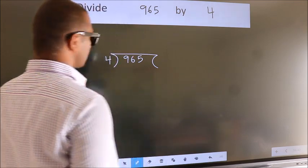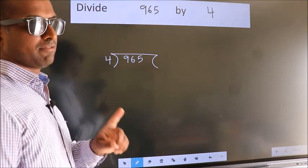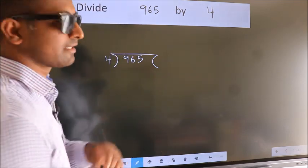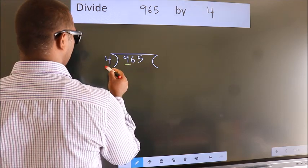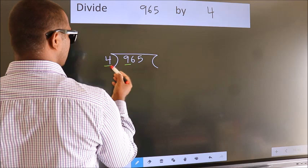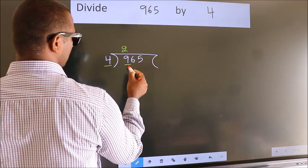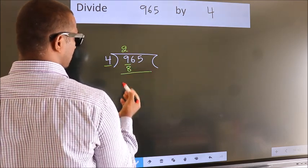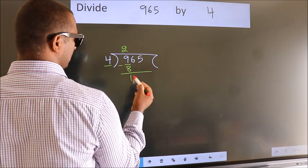This is your step 1. Next, here we have 9, here 4. A number close to 9 in 4 table is 4 twos, 8. Now, we should subtract. We get 1.